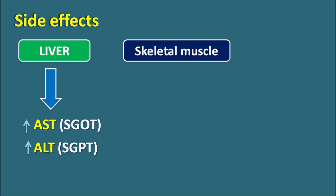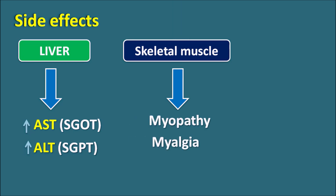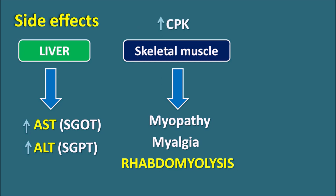Another important organ affected is the skeletal muscle. Phenofibrate can produce myopathy and myalgia — muscle pain — which is observed with all drugs within this category. Sometimes it may lead to the serious skeletal muscle disorder rhabdomyolysis, which is the dissolution of skeletal muscle fibers due to the action of fibrates. Fibrates should be carefully given, and if any muscle pain is observed the drug should be immediately stopped. Phenofibrate can increase creatinine phosphokinase (CPK) levels in the plasma, indicating skeletal muscle disorder, so CPK levels should be checked regularly.